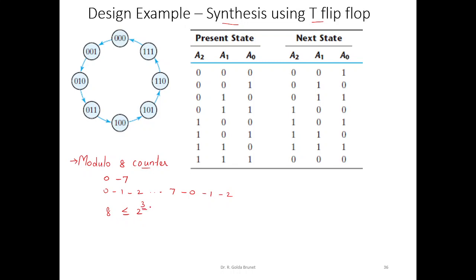We will assume binary bit pattern assignment. So 0 will be represented as 000, 1 as 001, 2 as 010, 3 as 011, 4 as 100, 5 as 101, 6 as 110, 7 as 111, and then we will go back.